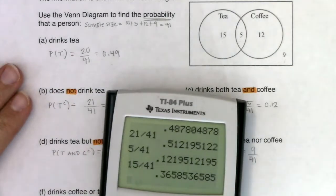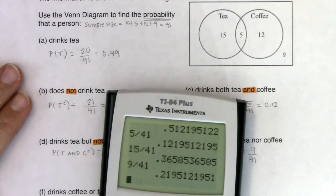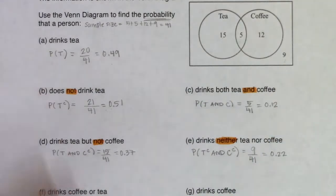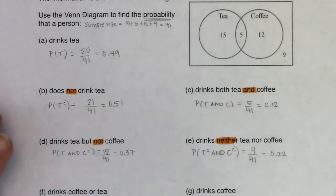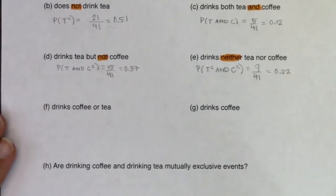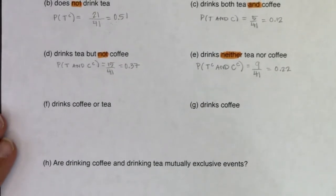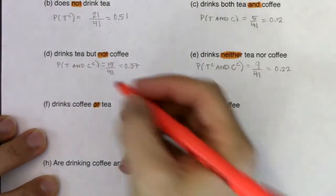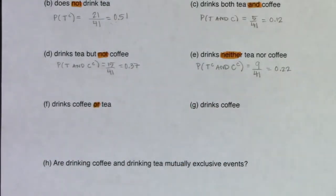Crunching that number, 9 out of 41 gives us about 22%. Moving along to part F, this asks what's the probability that a person drinks coffee or tea. The buzzword is 'or.' There are a couple of ways to do this — I'm going to do it with the formula first, then show the faster way once you're more comfortable with Venn diagrams.